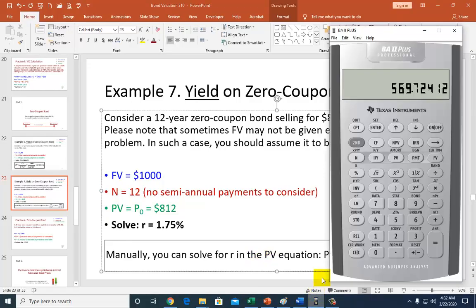And so, with our BA2 plus, clear, second clear TVM, and second clear work. So, we type them in. $1,000 is face value. 12 is number of periods. $812 with a negative is our PV. And then we compute I. And the result is as is, 1.75%.